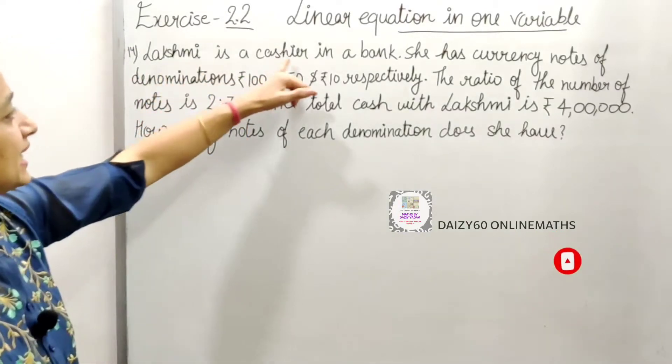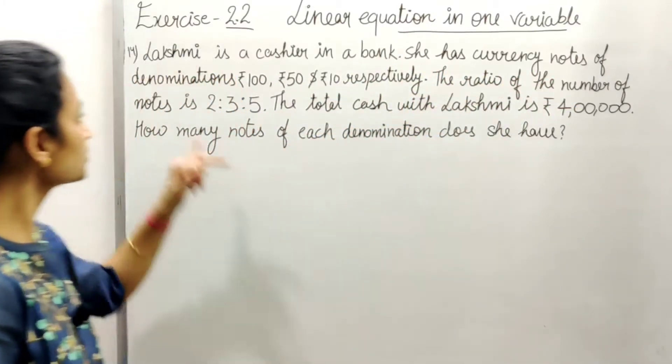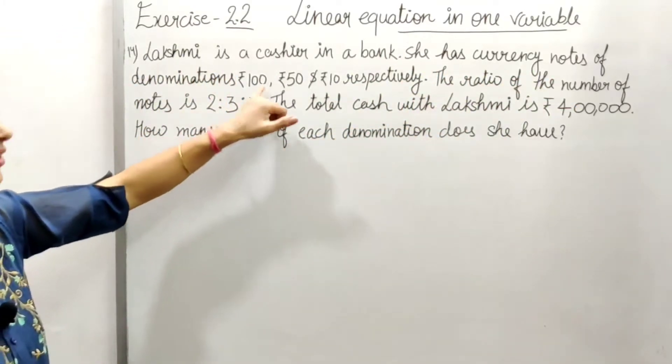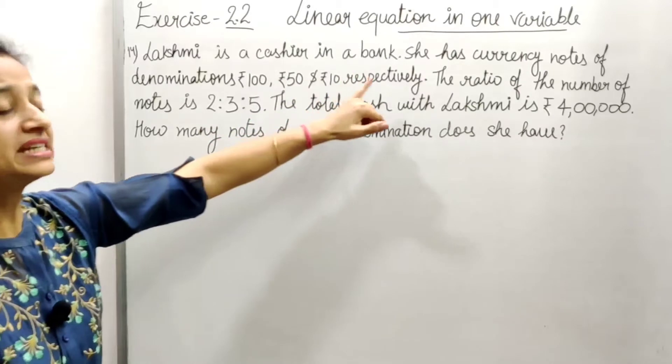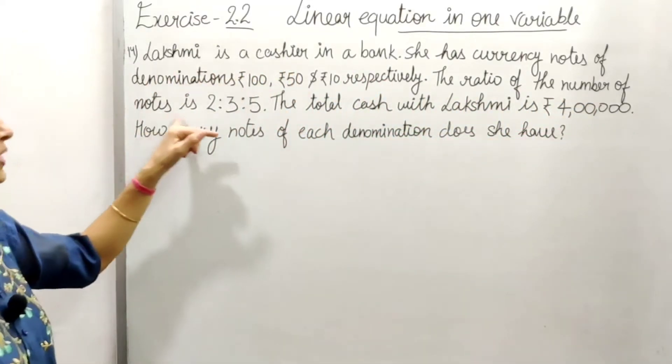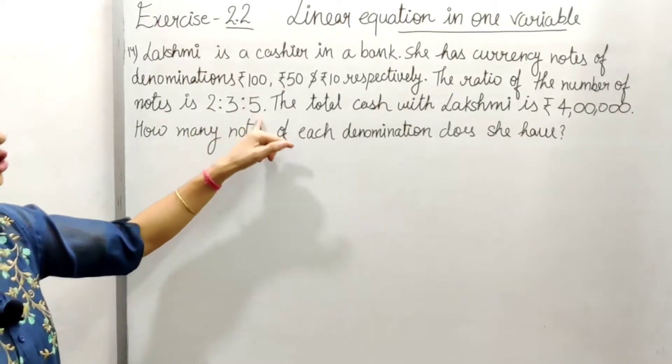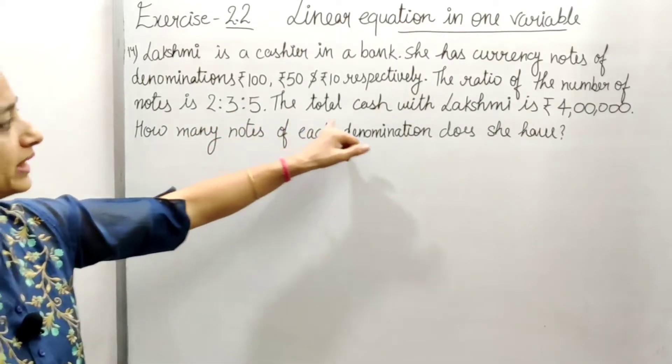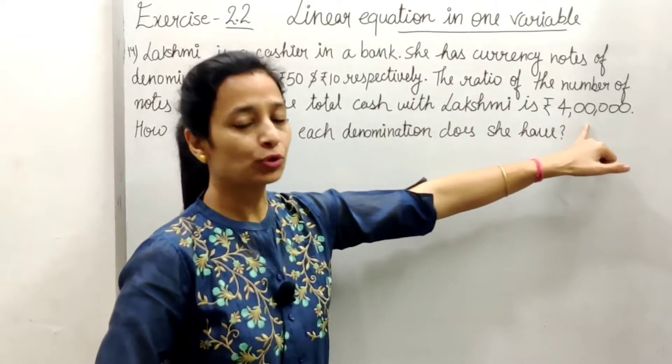Lakshmi is a cashier in a bank. She has currency notes of denominations ₹100, ₹50, and ₹10 respectively. The ratio of the number of notes is 2:3:5. The total cash with Lakshmi is ₹4,00,000.